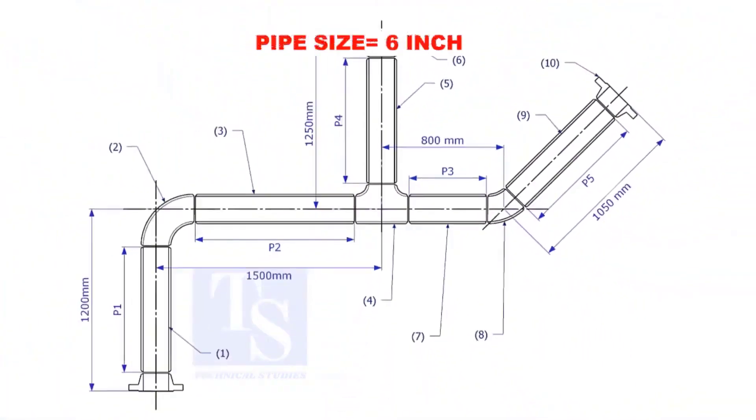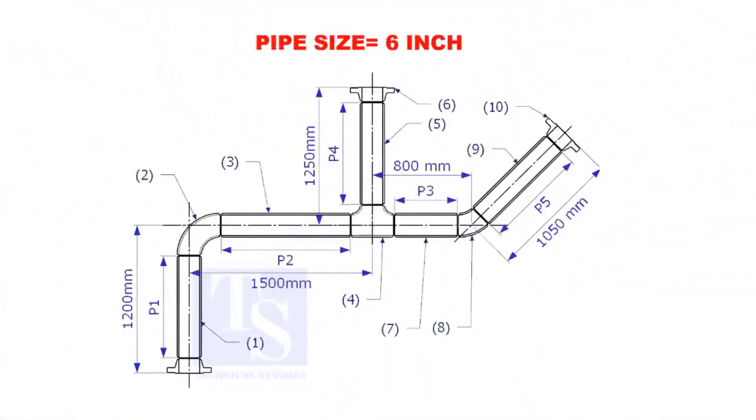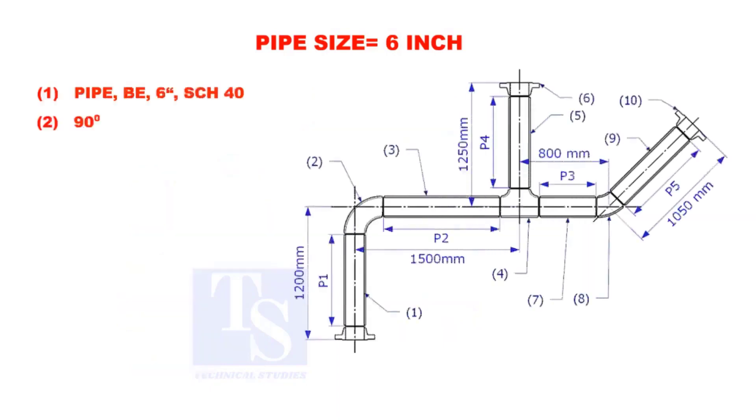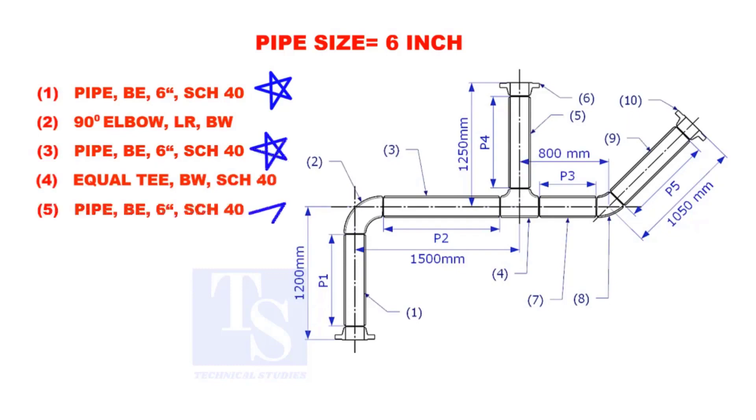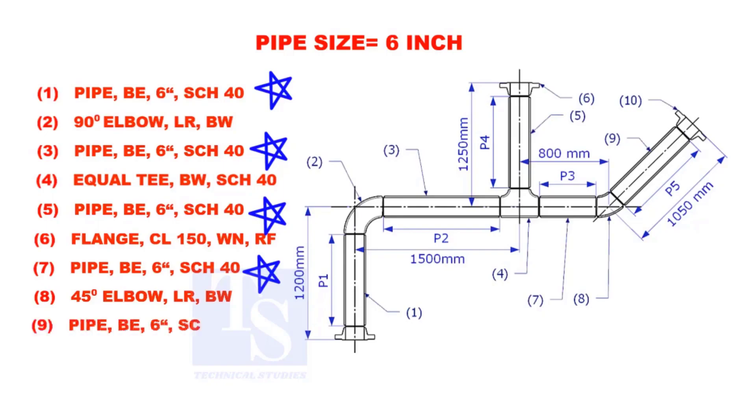Assume that the pipe size is 6 inches. Item numbers 1, 3, 5, 7, and 9 are pipes.